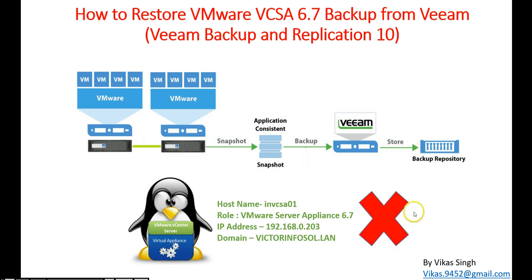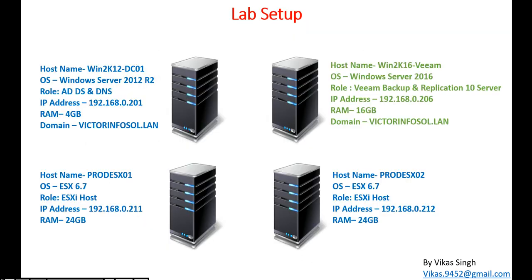In the last video we got vCSA01 up and running on vCenter Server Appliance 6.7. Let's assume this server got deleted or corrupted, and now we are looking for a way to restore it from backup. In this video we are going to see how we can restore it. This is my lab setup.